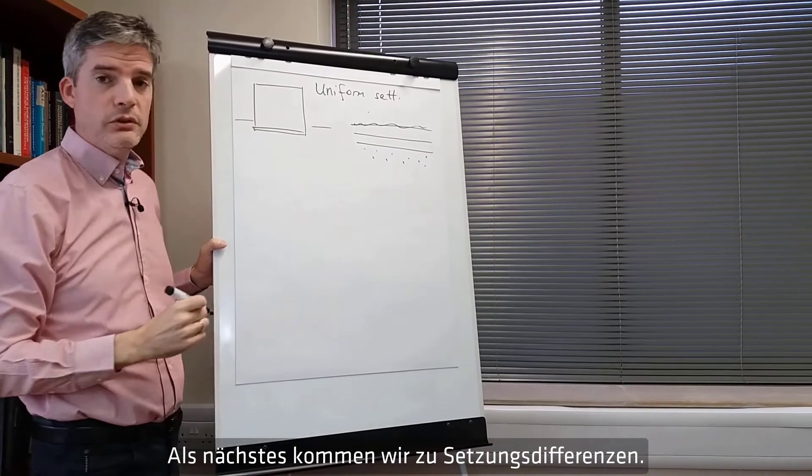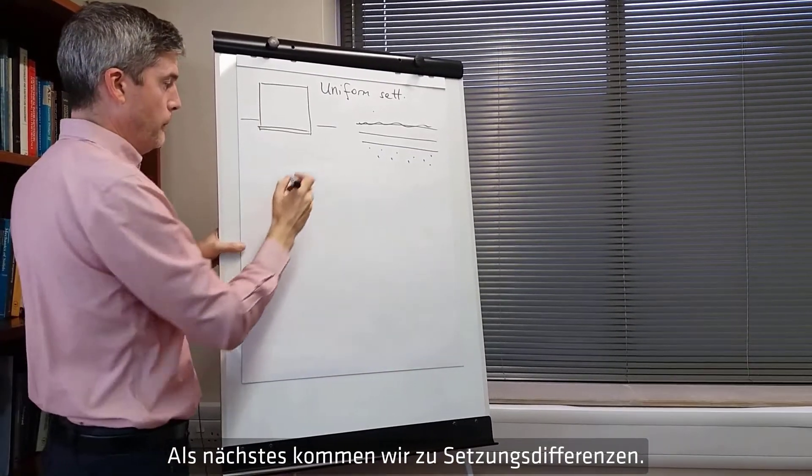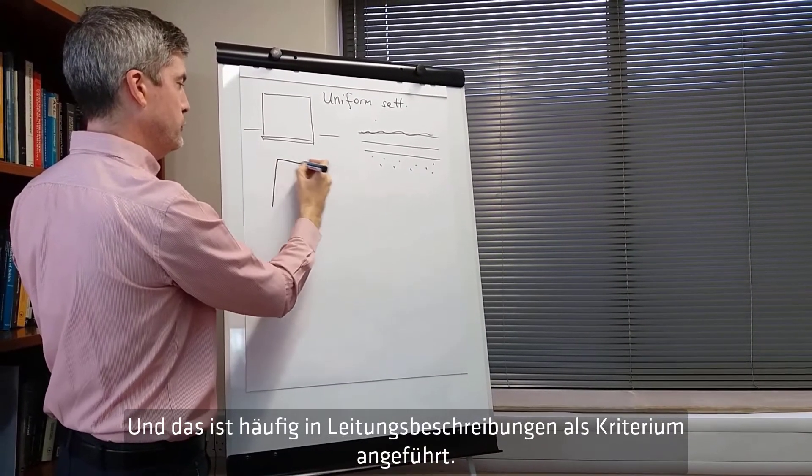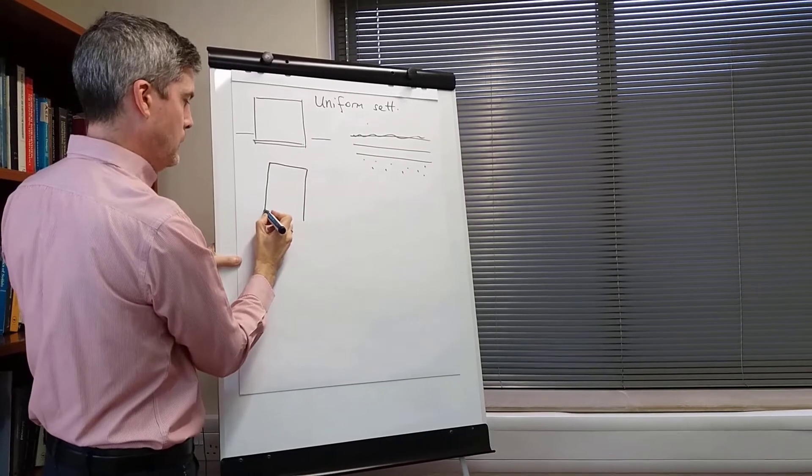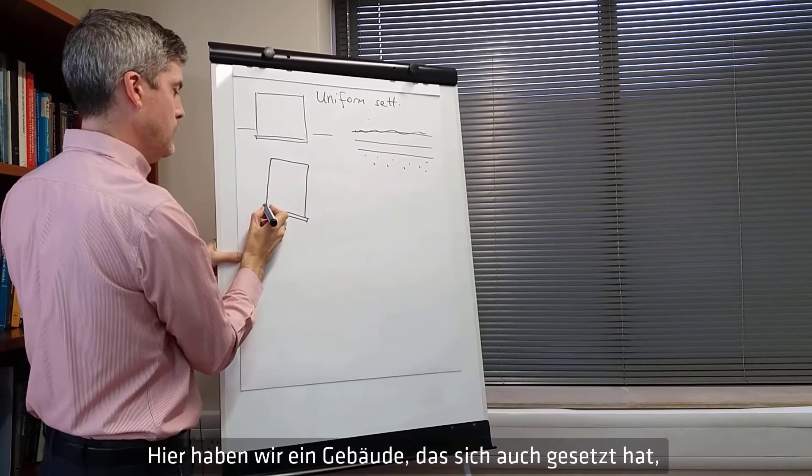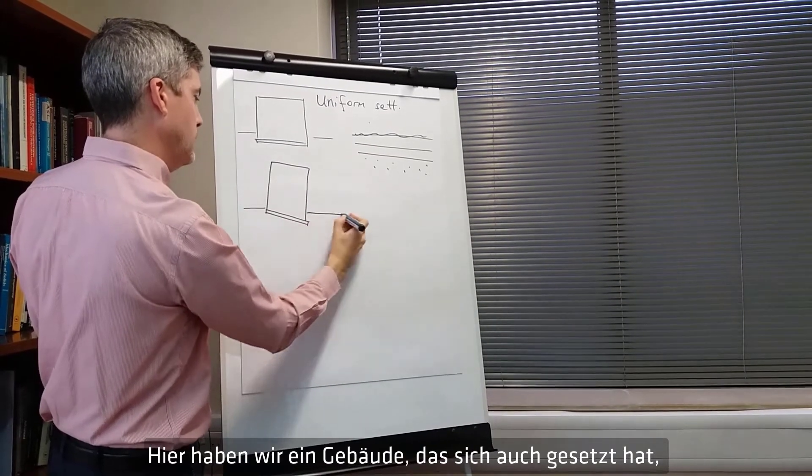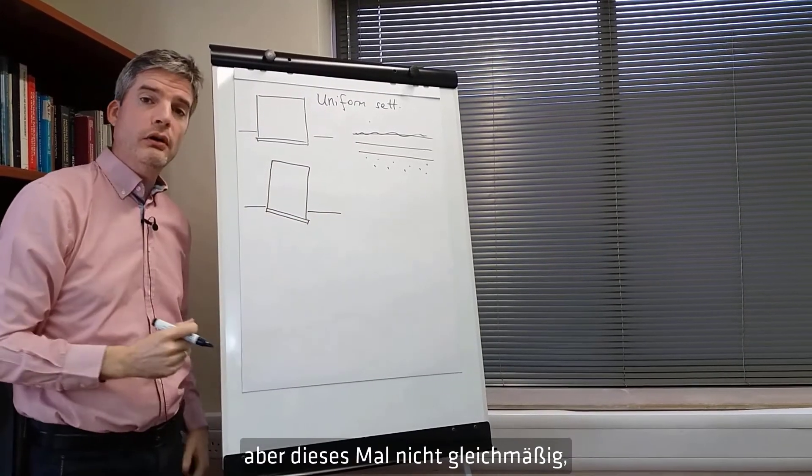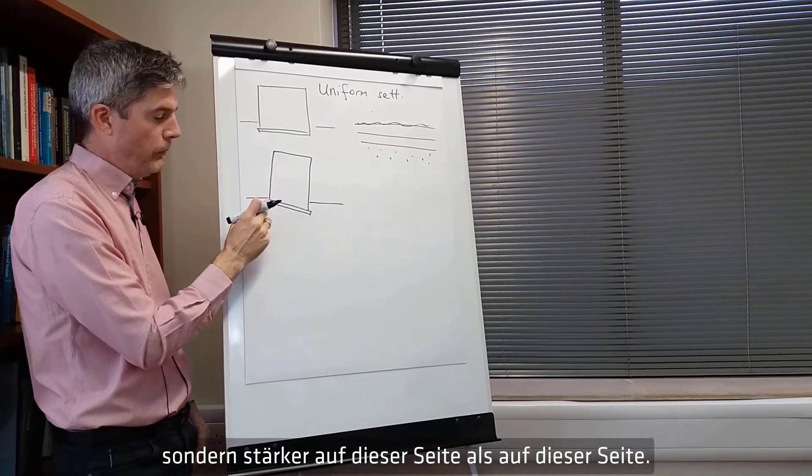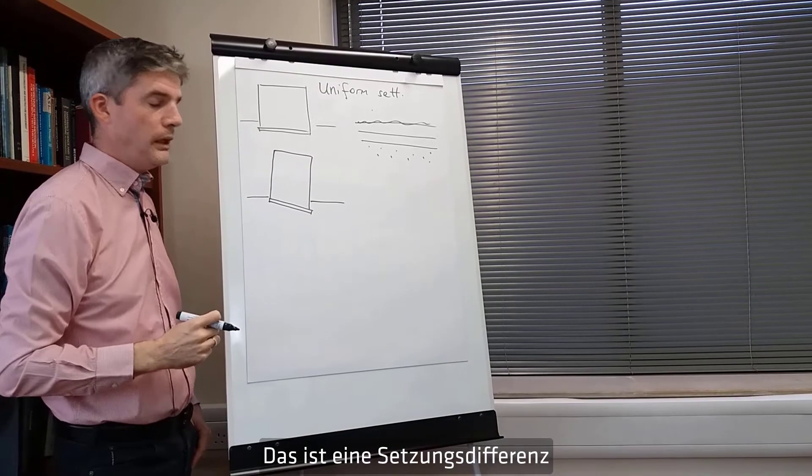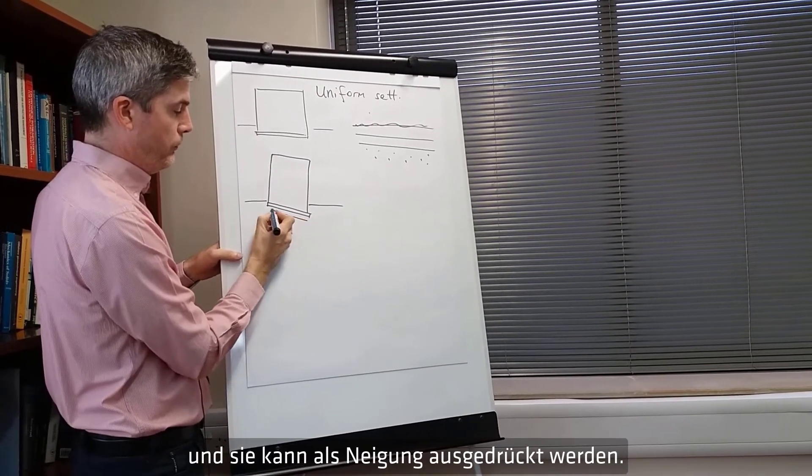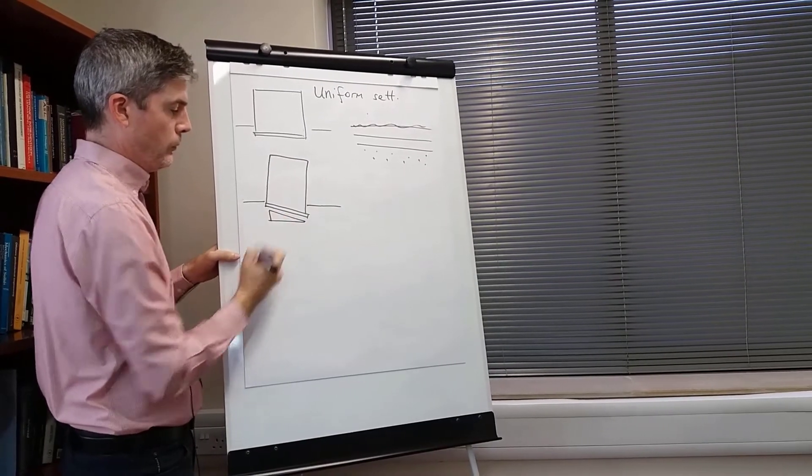Next we come to differential settlement, and this is what is often quoted in specifications as a performance criterion. So here we have a building that has settled again but this time not in a uniform way. It has settled more on this side than it has on this side. So that is a differential settlement and that can be expressed as a slope.